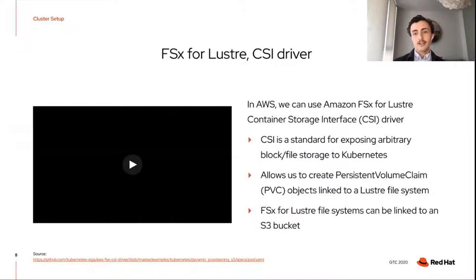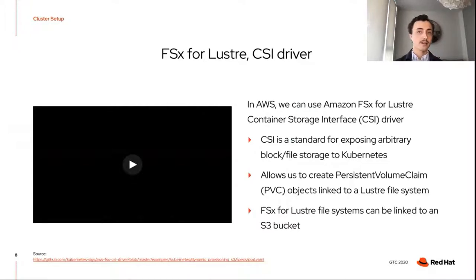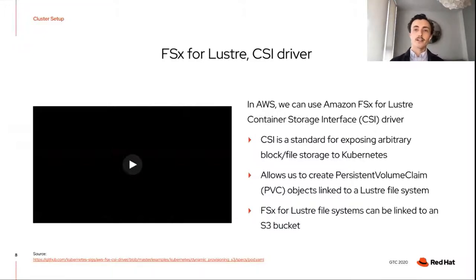For this proof of concept we're using an OpenShift cluster running on AWS because AWS has a Lustre file system service called Amazon FSx for Lustre. FSx for Lustre allows Lustre file systems to be created and linked to an S3 bucket, enabling convenient and high-performance consumption of data already stored in S3. There's a container storage interface driver for FSx for Lustre which simplifies the use of Lustre file systems in Kubernetes on AWS. The CSI is a standard for exposing storage systems to Kubernetes. Normally this CSI driver would require every node to have the Lustre client installed on the host, but thanks to the Lustre client driver container deployed with SRO, this part can be done with containers. This demo video shows the CSI driver enabling us to create a persistent volume claim to access the Lustre file system from pods.